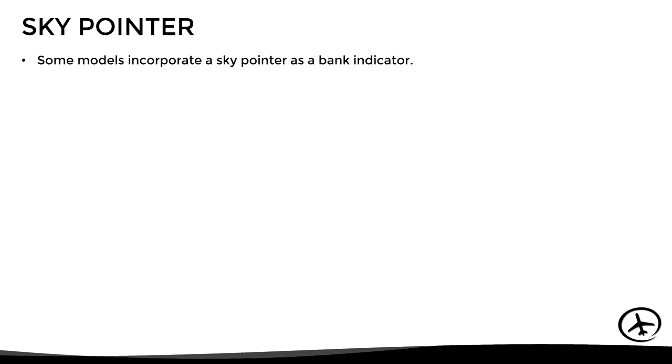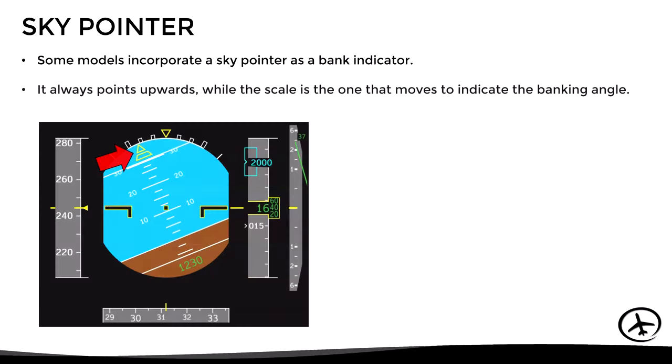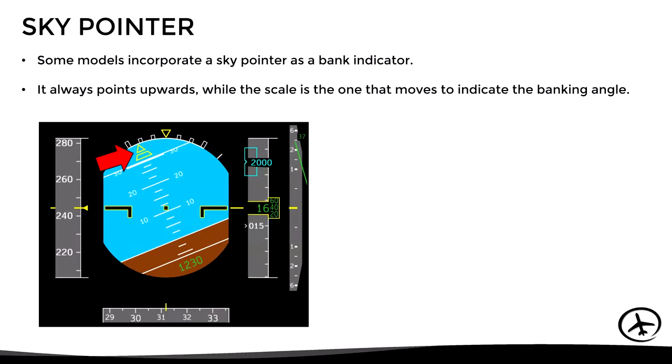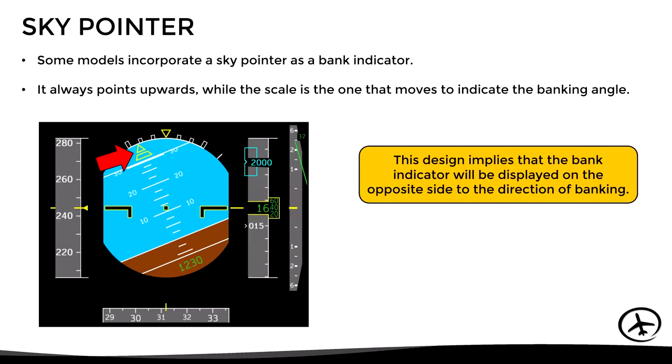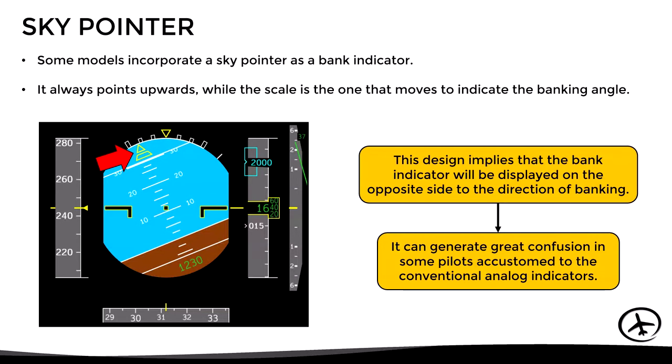In all of those examples a conventional bank indicator was used. However, some attitude indicators incorporate a sky pointer as a bank indicator. A sky pointer remains fixed pointing upwards while the banking scale moves to indicate the bank angle. As a result, when the aircraft banks to one side, the sky pointer appears to move to the opposite side — which can be confusing for pilots accustomed to conventional bank indicators.